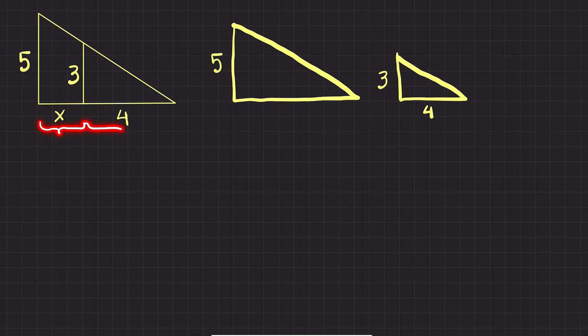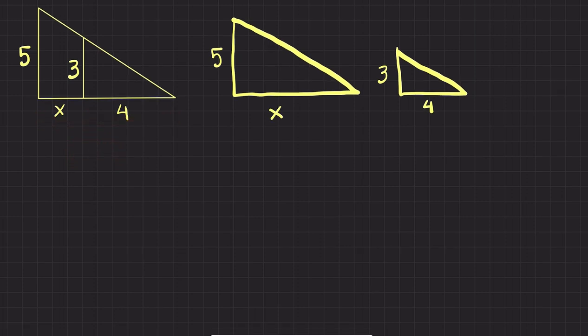The important thing here is to find the total length of the base of the big triangle. X goes from here to here, and then four from here to here, so the total length of the base of the big triangle is X plus four.